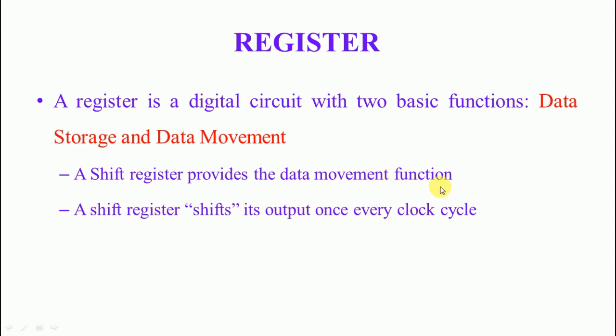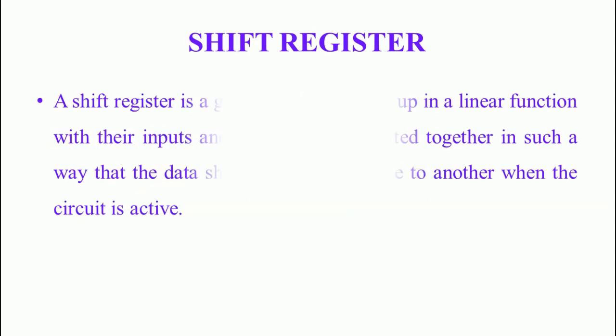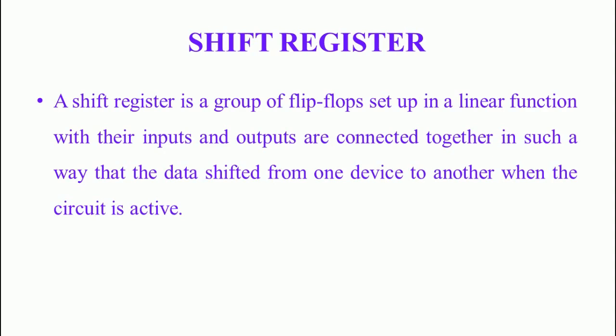The data movement function works based on every clock pulse. With each clock pulse, data can be moved from one device to another. Binary information in a register can be moved from stage to stage within a register, or out of the register, upon application of the clock pulse. The clock pulse can be classified into two types: positive edge and negative edge. A flip-flop that responds to the positive edge is called a positive edge flip-flop, and one that responds to the negative edge is called a negative edge flip-flop.